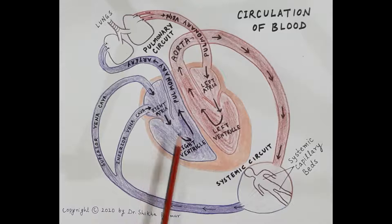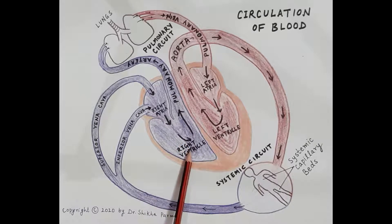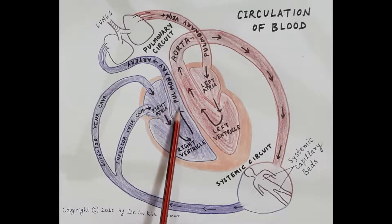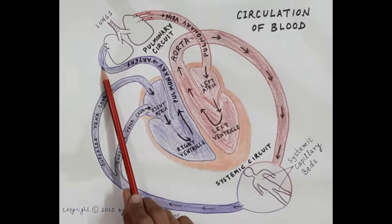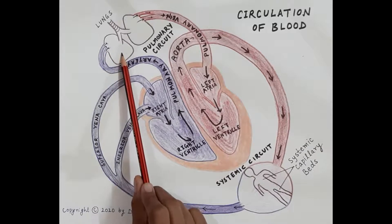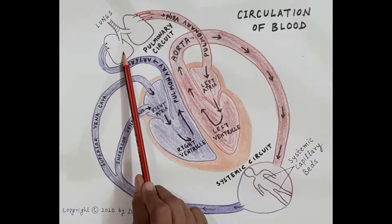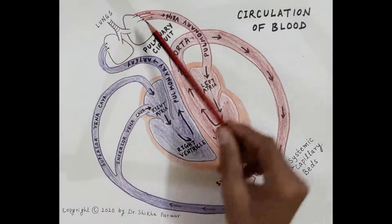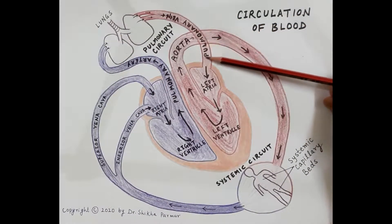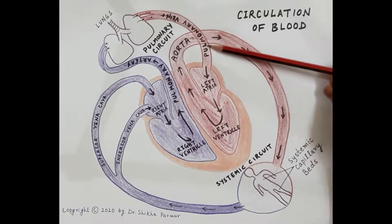When the right atria contracts, this deoxygenated blood is pumped into the right ventricle. When the right ventricle contracts, this deoxygenated blood is pumped into the pulmonary artery, and via the pulmonary artery this deoxygenated blood reaches the lungs. In the lungs, this deoxygenated blood is oxygenated, and the oxygenated blood is carried by the pulmonary vein.